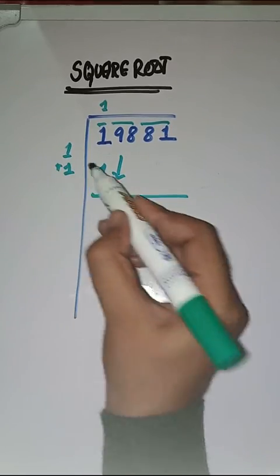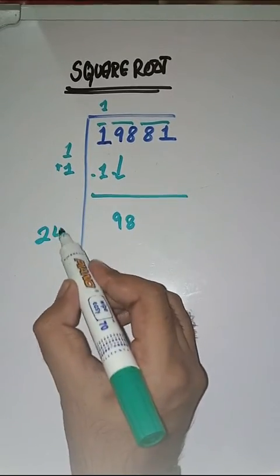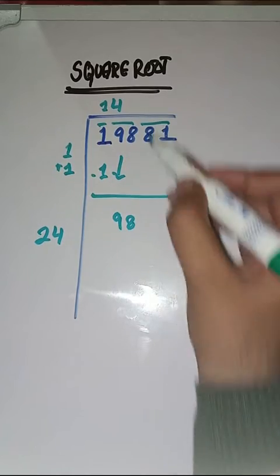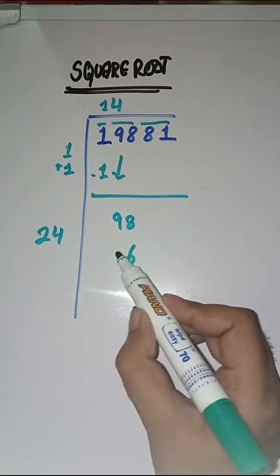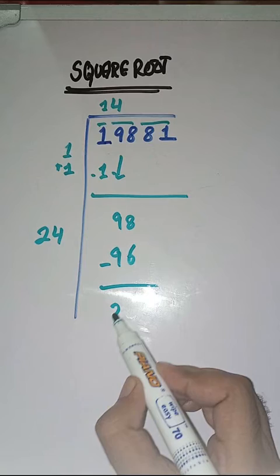We have to twice. 1 plus 1 is equal to 2. 24, fours are 96. We have to get 2.